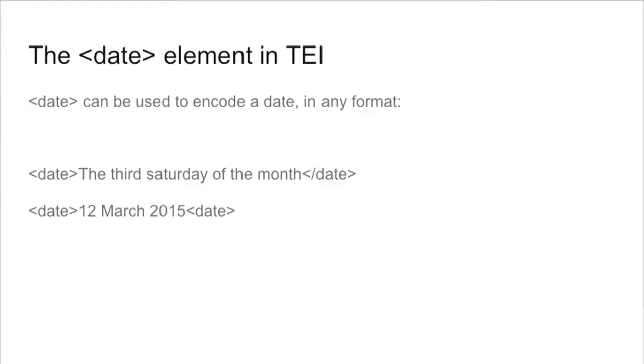There is the ISO, the W3C, and the custom way. For our exercise and for this MOOC, we will only talk about the basic one, which is the W3C version of the date. The TEI has an element called date, and it can be used to encode a date in any format. So you can use the element date for the third Saturday of the month, or for 12 March 2015. It's very generic and not very specific.